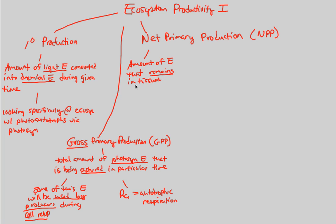The energy that remains in tissues — basically not used — after the important process of cellular respiration is NPP. Though plants do cellular respiration and use some of the energy, the rest is stored and remains in tissues. The formula is: NPP = GPP − R_A. Subtracting autotrophic respiration from gross primary production gives us the net primary production.